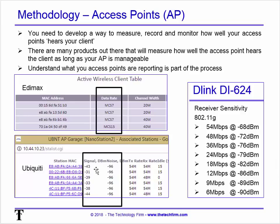These negative values throw people off right out of the gate. The best way to remember it: the closer the number is to -100, the weaker the signal; the closer it is to zero, the stronger. So -31 is better than -43. For noise, we want that as close to -100 as possible. A cutoff might be around -65, so values better than that with noise in the high -90s is an awesome signal.